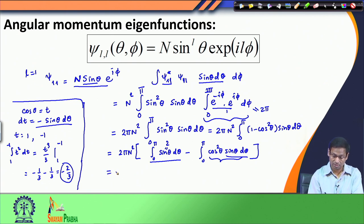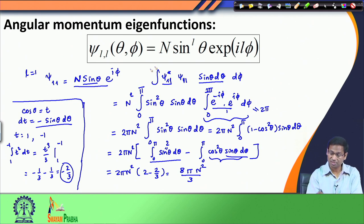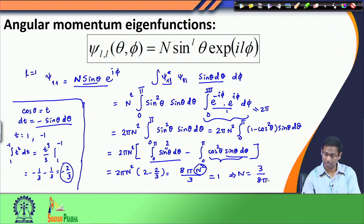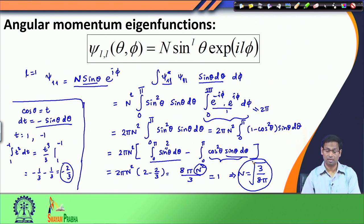So 2 minus 2/3 equals 4/3. Therefore I have 2pi times N^2 times 4/3, which gives 8pi*N^2/3. If this function is to be normalized, the right-hand side must equal 1. So N equals the square root of 3 over 8pi. I will use this normalization constant to write down the complete functional form of psi_11.